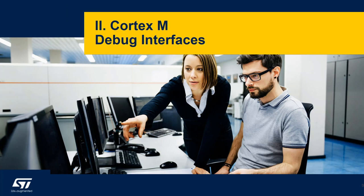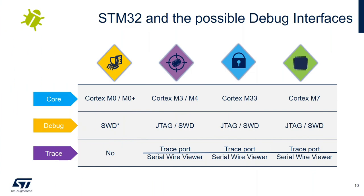Let's check what debug interfaces are available for each Cortex-M core. For the Cortex-M0 and M0 Plus products, we only allow the SWD interface. Even though by default with ARM these cores can have JTAG, on our product line only the Serial Wire Debug interface is available. For all others — including the Cortex-M3, M4, M33, and M7 — they all have both interfaces available, meaning both JTAG and Serial Wire Debug SWD.